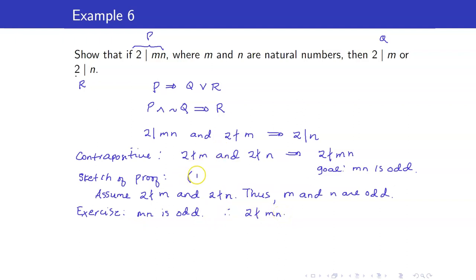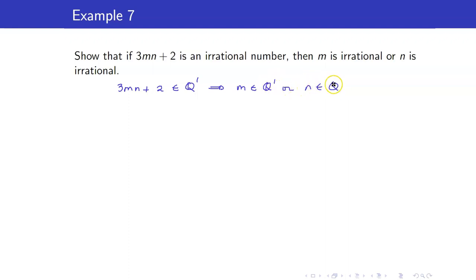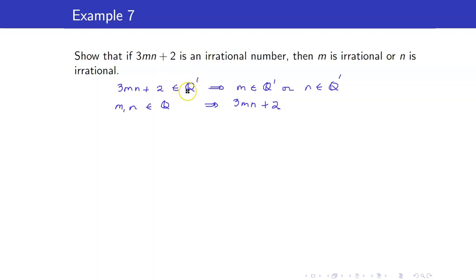So that is the proof by contrapositive. Next, let us show that if 3MN plus 2 is an irrational number, then M is irrational or N is irrational. The premise — 3MN plus 2 is irrational — is more difficult to work with because you already have 3MN. I prefer to start with M and N, that is why we prove the contrapositive. The contrapositive is: if M and N are both rational, then 3MN plus 2 is rational as well.